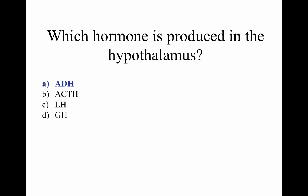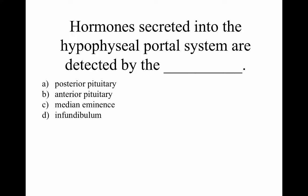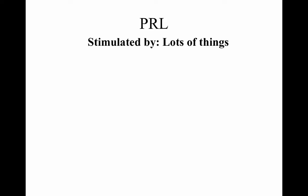Antidiuretic hormone and oxytocin are actually produced in the hypothalamus and then sent to the posterior pituitary for release into the bloodstream. Releasing hormones detected via the hypophyseal portal system by the anterior pituitary then go ahead and release their stimulating hormones.